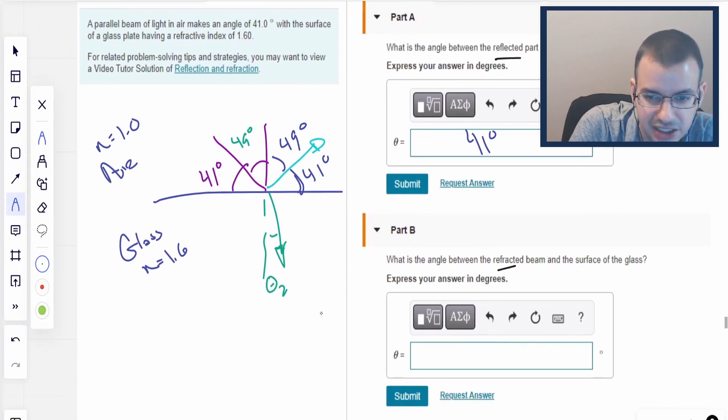What is the angle between the reflected part of the beam and the surface of the glass? Angle of incidence is the angle of reflection. And so 41, 49, 49, 41. Easy, 41 degrees.